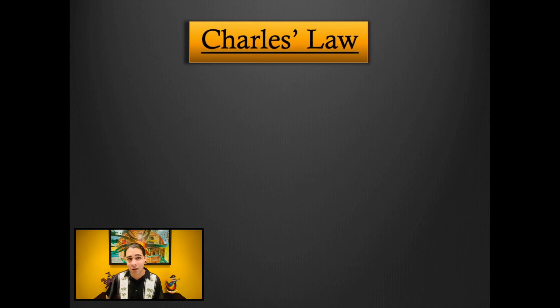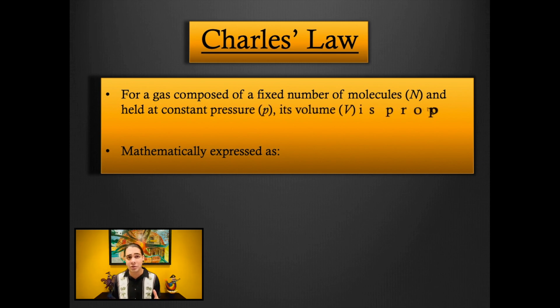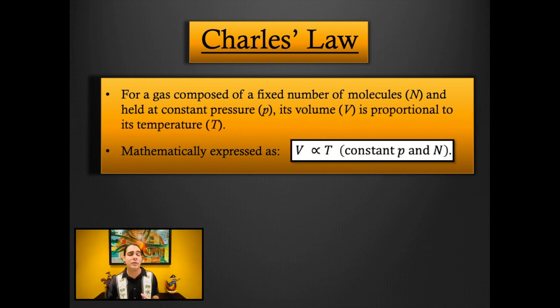Finally there is Charles' law. So if I fix the pressure of my system and also the number of molecules, and I adjust the temperature and measure its volume, I'll notice that when the volume increases the temperature increases, or if the temperature decreases the volume decreases. In other words, the volume is proportional to the temperature, meaning that the volume is equal to some number times the temperature. That is known as Charles' law.